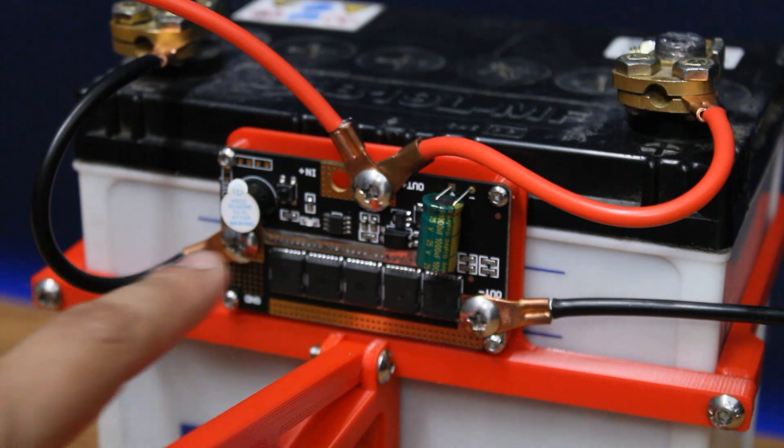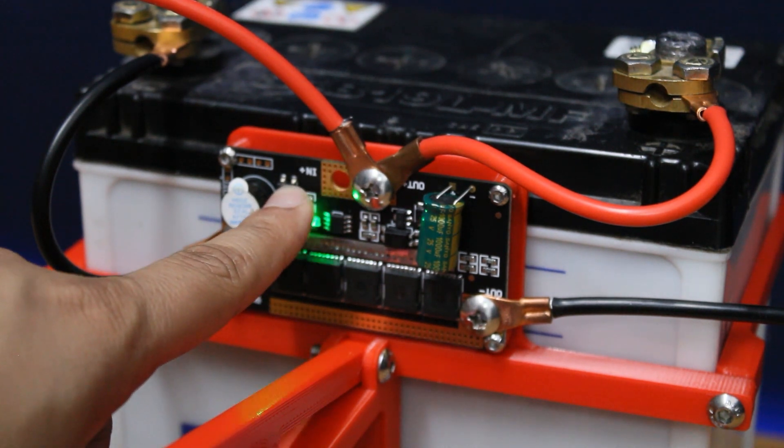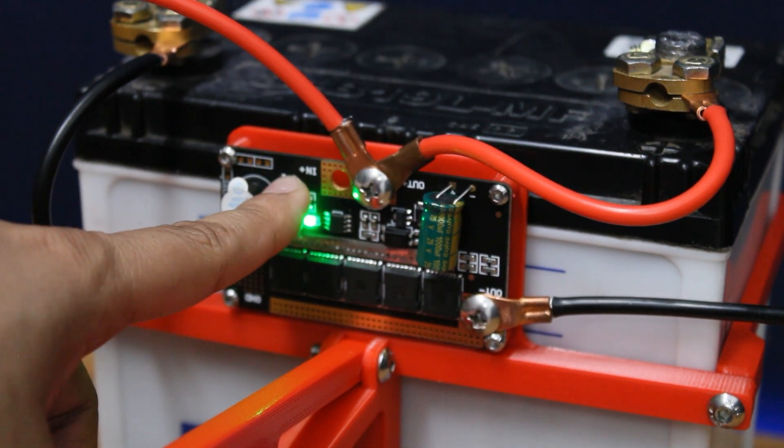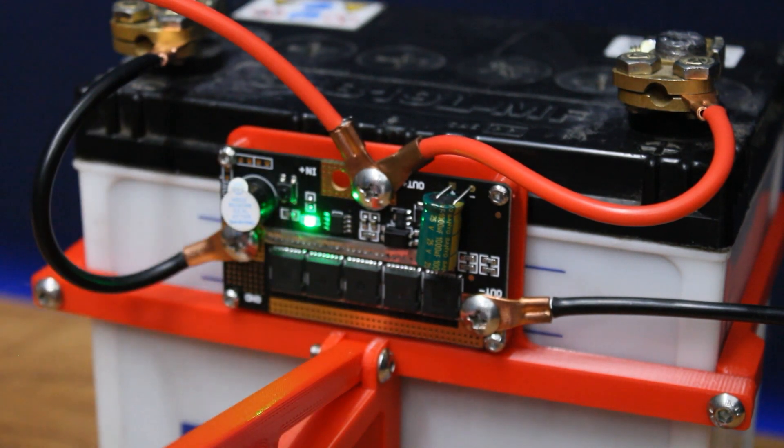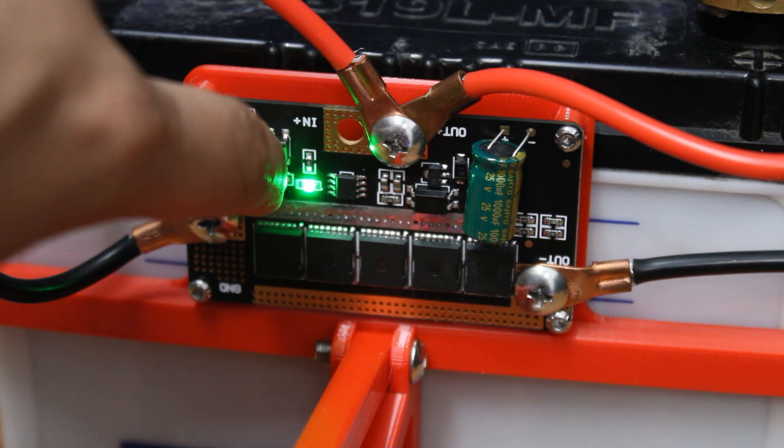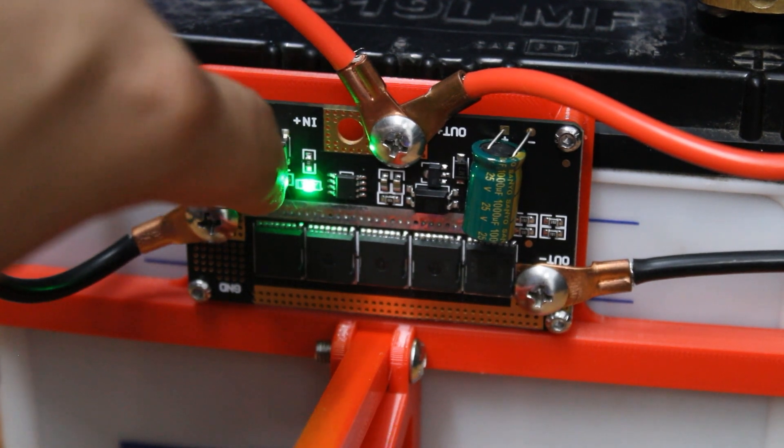To use the spot welder, simply place the battery cells below and power on the board. The PCB has a power button which can also be used to set the power output. Simply long press the power button and you will see the green light blinking. The number of blinks tells us the power level.